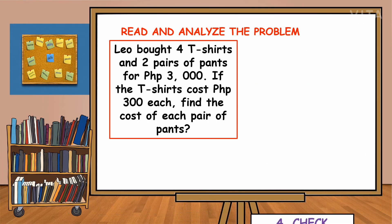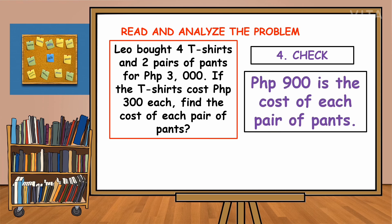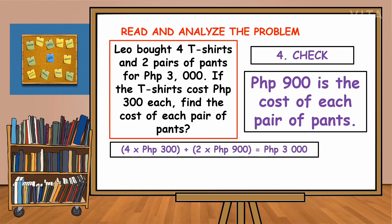The last step is checking. In checking, write your final answer. So the final answer is 900 pesos, and that is the cost of each pair of pants. To know if our answer is correct, we substitute our final answer into our number sentence. So we have 4 times 300 pesos plus 2 times 900 pesos, and that is equivalent to 3,000 pesos.